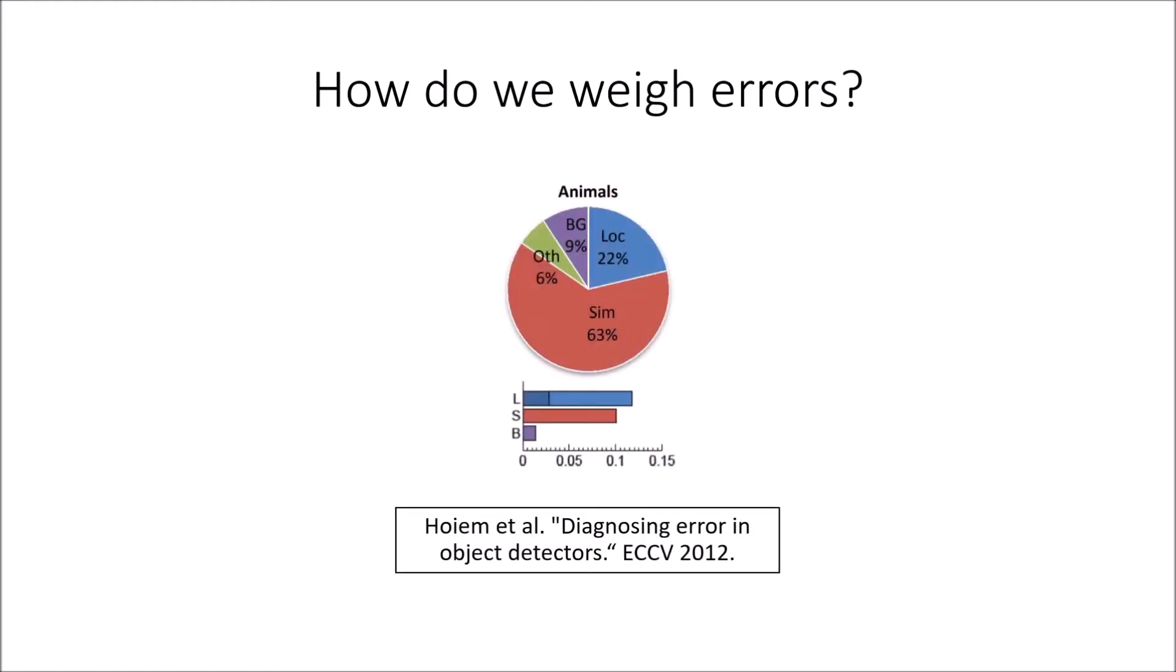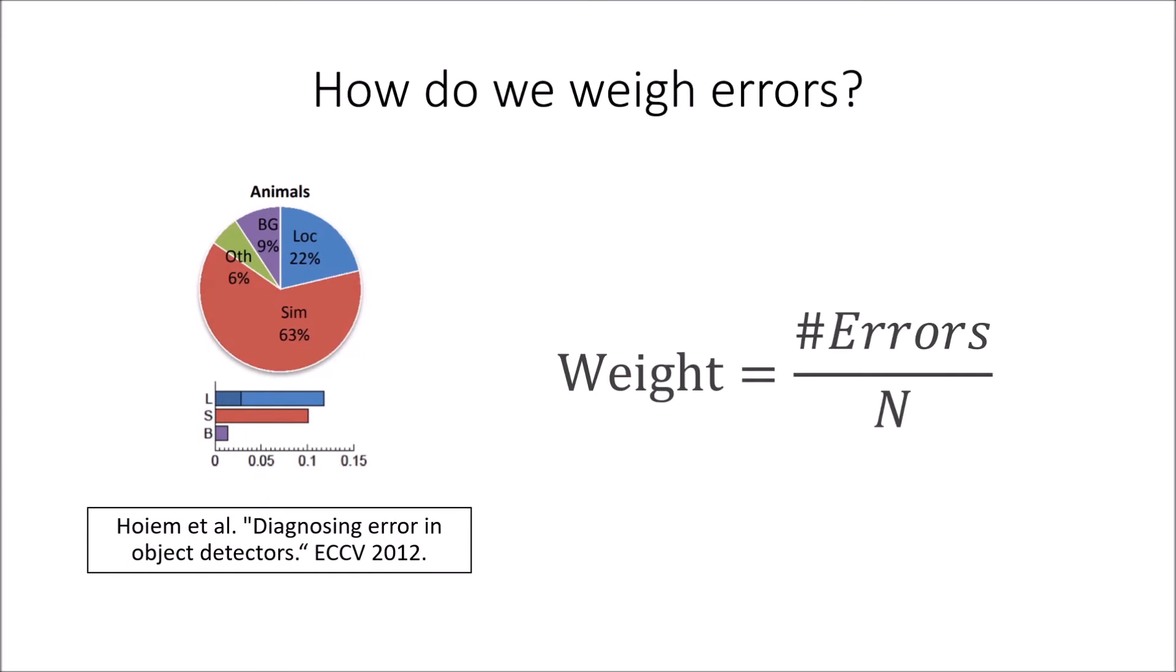Holm et al. weights errors by their prevalence in the top-end scoring erroneous detections. While this method is very intuitive, it doesn't describe an error type's contribution to overall MAP, it ignores lower scoring detections, and it only works for false positives.